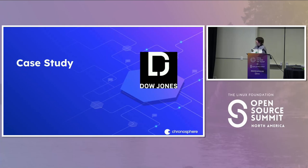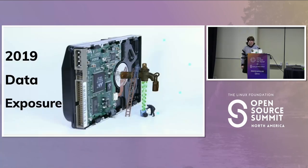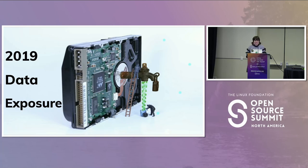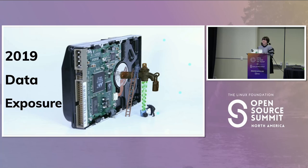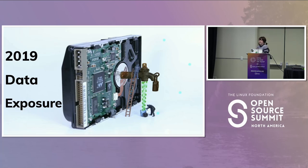Dow Jones — big company, big impact on the world. What happened with Dow Jones and security? In 2019, they experienced a data exposure. An unauthorized third-party vendor failed to password protect an AWS-hosted Elasticsearch instance. Because of that, the database was available to anybody and was very easily found by IoT-like search engines — it was not even security through obscurity. People could find this. This misconfigured database was not even discovered by Dow Jones — it was discovered by a security researcher who reported it. Props to them.